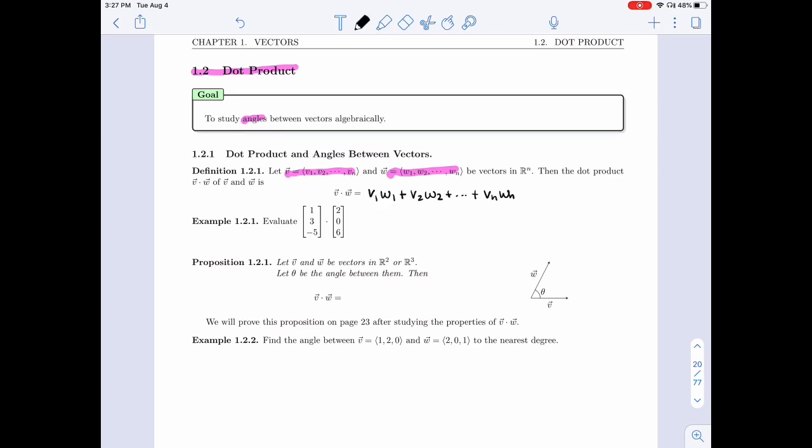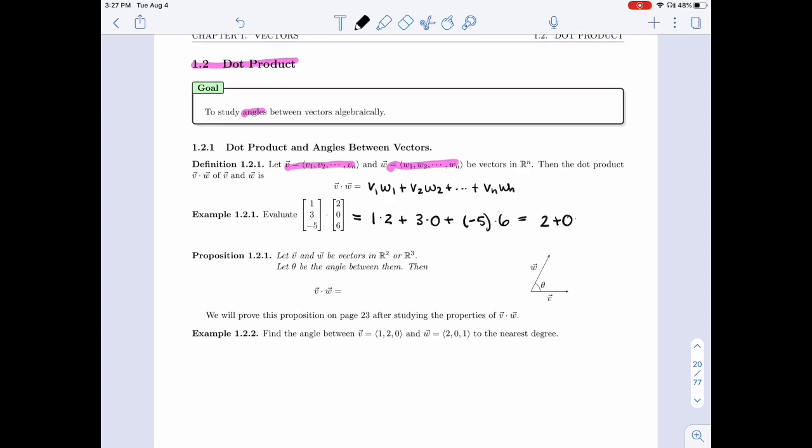So for example, in 1.2.1, we're asked to evaluate this dot product. So I'm going to take the first components of both vectors, multiply them. I'm going to take the second ones and multiply them. And then the third one, multiply them. So I get 2 plus 0 minus 30. I get minus 28.